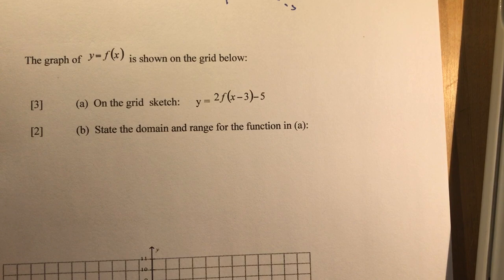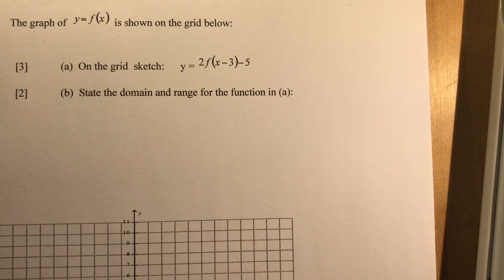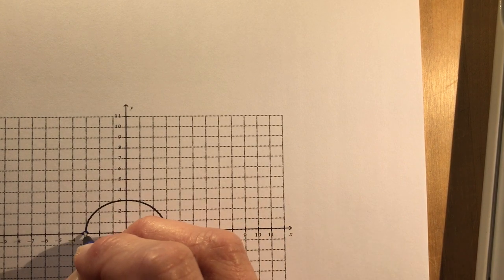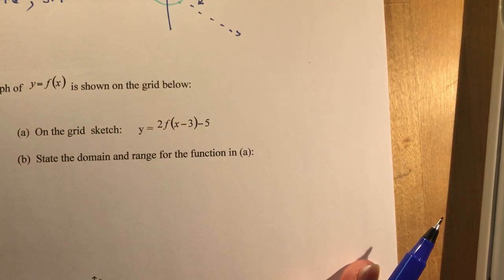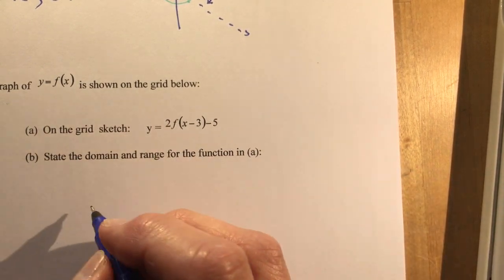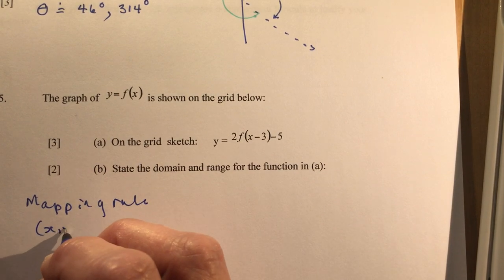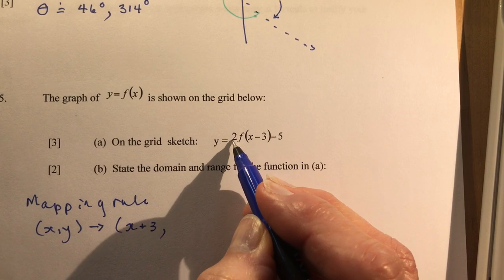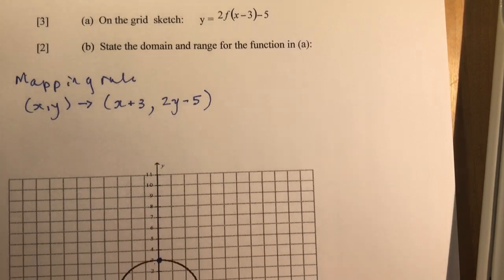Number 5. The graph of y equals f at x is shown on the grid below. On the grid, sketch y equals 2f at x minus 3 minus 5. State the domain and range for the function in A. I have here a graph with some points. I'm going to choose three of these points so that I can work with them to find the graph of the transformed function. Here's my function, this is my transformation. So I'm going to write the mapping rule. Mapping rule is going to be x and y go to x plus 3 and 2y minus 5. If you can't remember these, you should go back and check your mapping rules.